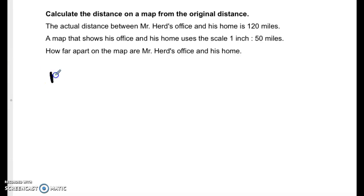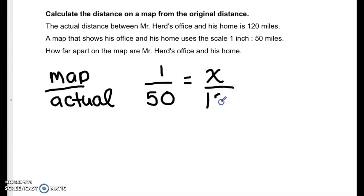So let's have our map over our actual and we have 1 inch to 50 miles is equal to, we don't know the distance on the map so we'll call it x over 120 miles is our actual. So let's cross multiply: we have 1 times 120 which is 120 and 50 times x which is 50x, and we want x by itself so let's divide by 50 on both sides.